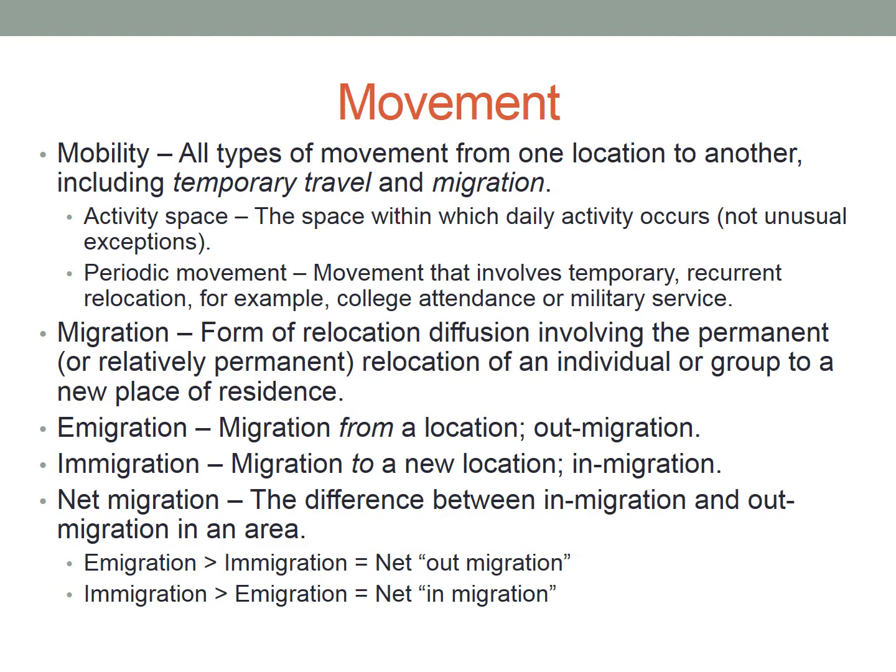We have two different types of migration to differentiate: emigration and immigration. Emigration is migration from a location — out-migration. Think of the 'E' as emptying or exiting. Immigration is migration to a new location — in-migration; it's coming in. We can calculate net migration, which is the difference between in-migration and out-migration. If emigration is greater than immigration, we have net out-migration. If immigration is greater than emigration, we have net in-migration.